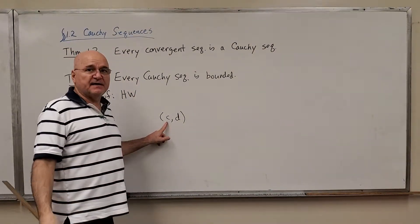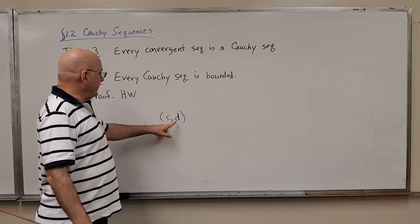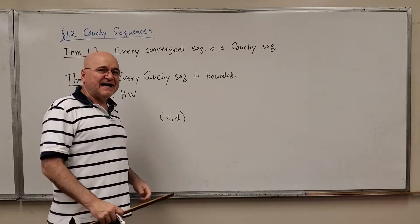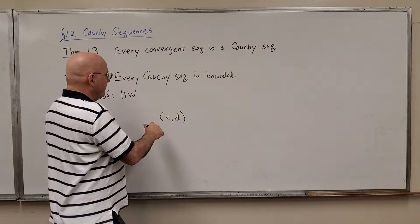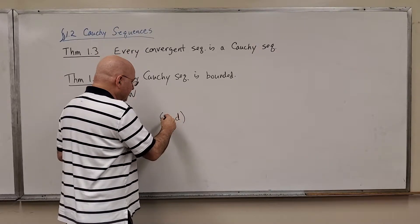C would just have to be a lower bound of the sequence, remember it's bounded, and D would be an upper bound of the sequence. We'll find out later that not only are there an infinite number of the elements of the sequence in this interval and only a finite outside of it,